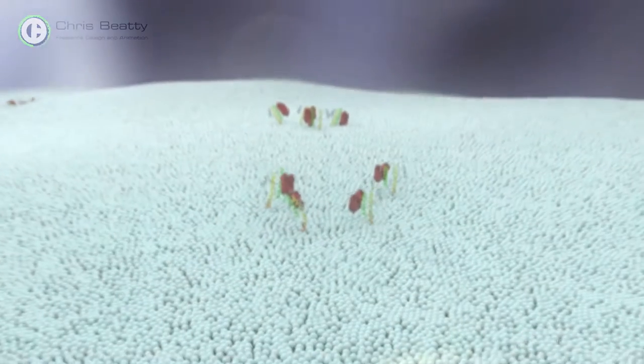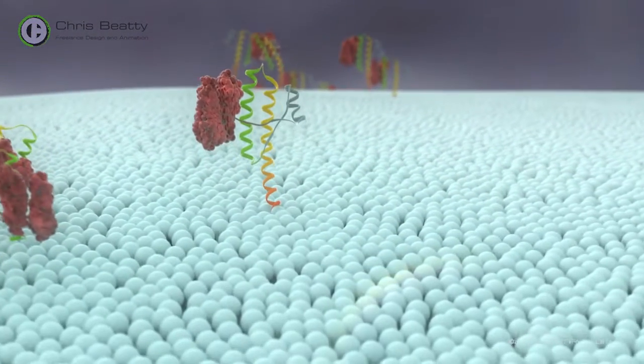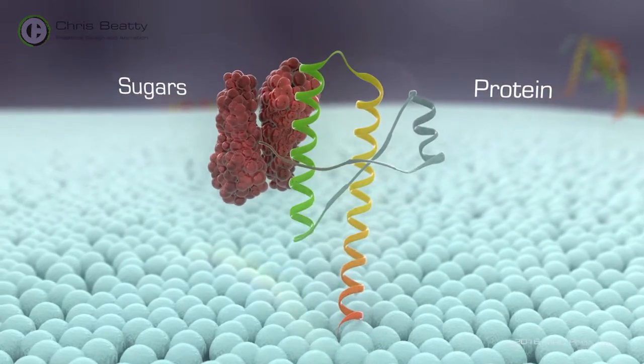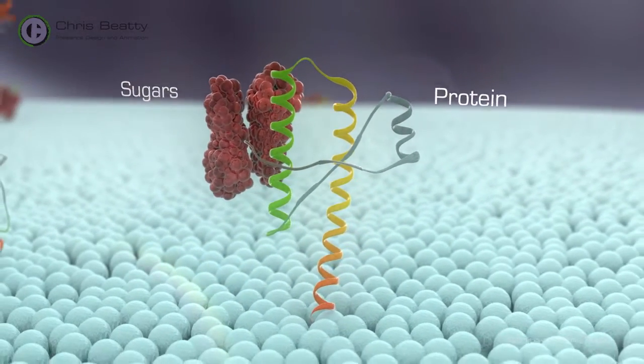There are many different protein molecules that normally sit on the surface of the nerve cells and one of these is called the prion protein. Thousands of these sit in clusters all over the cell surface and play a role in the normal function of brain cells.